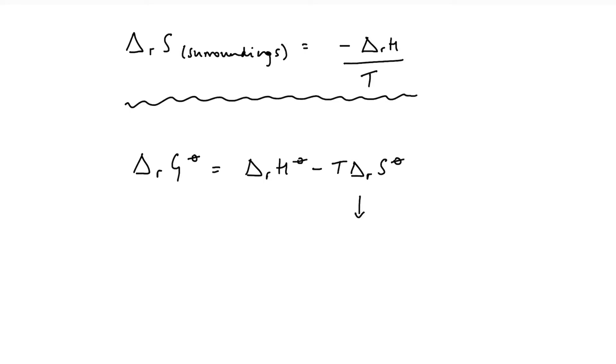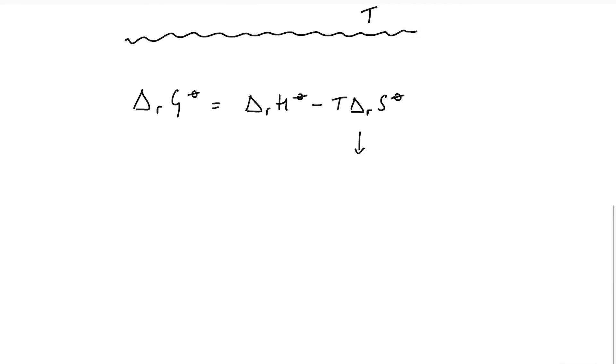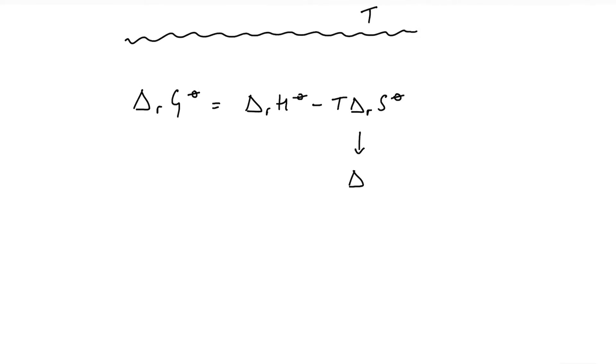Now, if we assume that for a spontaneous reaction, we know that the change in entropy has got to be positive, it's got to be greater than zero. Then because this is a negative term, that tells me that for a spontaneous or feasible reaction, delta G has got to be a negative value or less than zero. However,